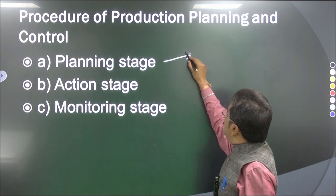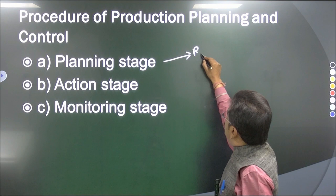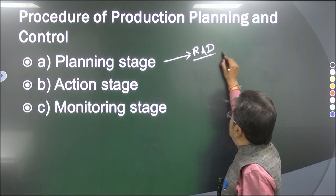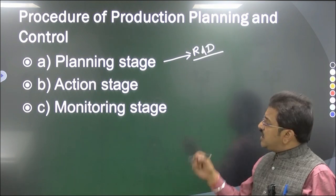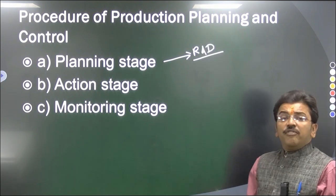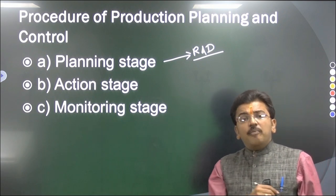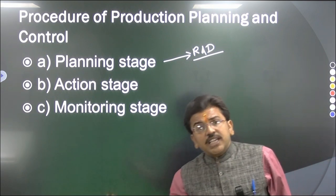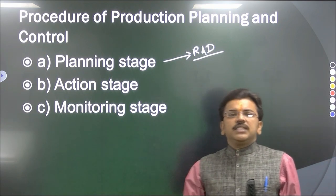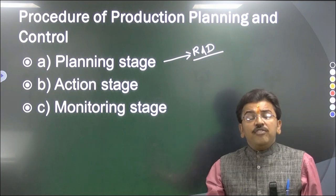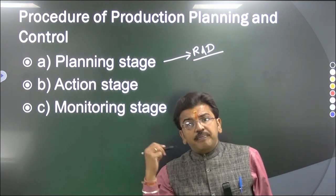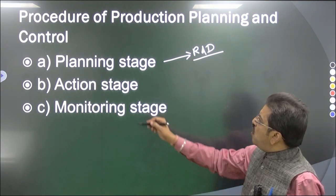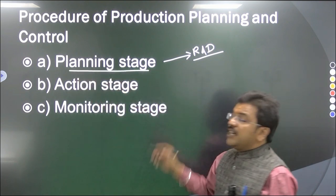The first stage is the planning stage — here we do a lot of R&D activity. We go to the market, we search about the product, we look at the raw material from where we are going to get it, what type of raw material is available, when we are going to launch the product, and what is the best market for our product. All these things are properly planned in the planning stage.